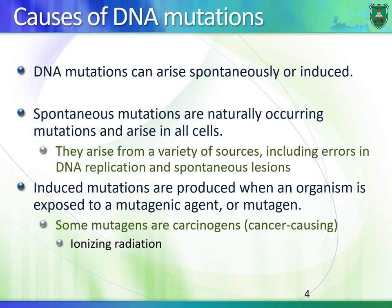There are different causes of DNA mutations. Overall they can occur spontaneously, or they can be induced — meaning an external factor causes these mutations. Spontaneous mutations occur as cells live, reproduce, divide, synthesize DNA, and metabolize. Induced mutations happen when an organism is exposed to a mutagenic agent or mutagen. Some mutations can cause cancer and are known as carcinogens. All carcinogens are mutagens, but not all mutagens are carcinogens. An example of a mutagen is ionizing radiation.